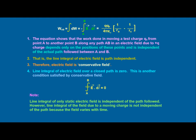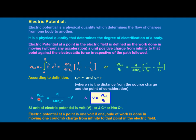The line integral of electric field over a closed path is zero — that is another condition satisfied by the conservative field. This is a very important equation; please remember it, as in the fourth or fifth unit we will discuss this particular equation under Maxwell's equations also. Note that the line integral of only a static electric field is independent of the path followed; however, the line integral of the field due to a moving charge is not path independent because the field varies with time.